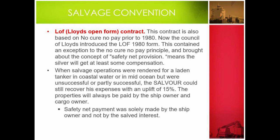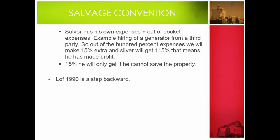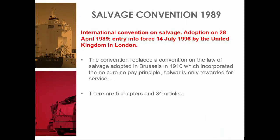Safety net payment was solely made by the ship owner and not by the salved interest. The salver recovers his own expenses plus out-of-pocket expenses — for example, hiring a generator from a third party. Out of 100 percent of expenses, the salver makes 15 percent extra, getting 115 percent total, meaning a 15 percent profit. However, he will only receive this if he cannot save the property. LOF 1990 is considered a step backward.